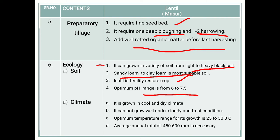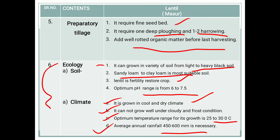In case of climate, lentil is grown in cool and dry climate — that means it is a rabi crop. It cannot grow well under cloudy or frost conditions. The optimum temperature range for its growth is nearly about 25 to 30 degrees Celsius. The average annual rainfall required is between 450 to 600 mm.